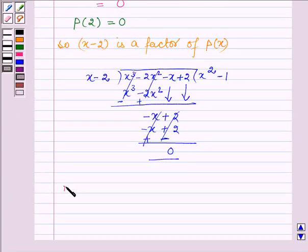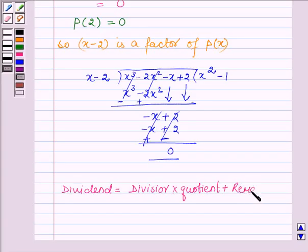As we know, dividend is equal to divisor into quotient plus remainder. The dividend is our p(x), divisor is x minus 2, quotient is x squared minus 1, and remainder is 0.